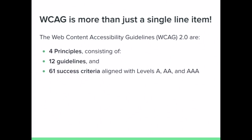There are three different levels for those criteria. Level A is the baseline with 25 success criteria — you really need to cover that. Level AA is frequently cited as what government sites need, and the Department of Transportation requires Level A and AA for airlines. And if you really want to level up, Level AAA makes a really good experience for users.